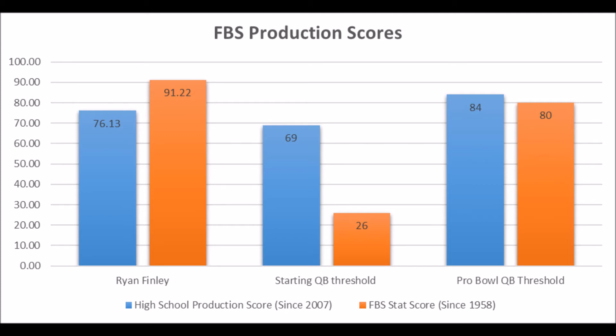If a player is utterly below average compared to his peers as a high schooler, then he's going to have a lot of catching up to do. High school production data shows what a player was compared to his peers at the high school level, and then once they got to college, the development goes further and further. Quarterbacks that are more developed coming out of high school typically go on to become the more consistent starting quarterbacks to Pro Bowl quarterbacks at the NFL level.